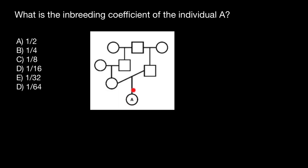So what is the inbreeding coefficient of individual A? Many of you may also think that this individual here is also a common ancestor of individual A, but actually this individual is a brother of the father of individual A. This individual doesn't pass its genes from the father side, only through the mother side. So this individual is a relative of both the mother — being the father of the mother of individual A — and a brother of the father of individual A. He is not considered to be a common ancestor from both the mother side and father side. Only this individual is.